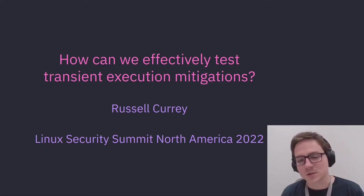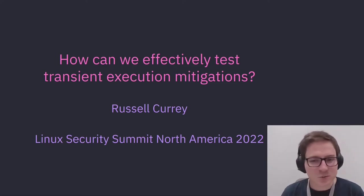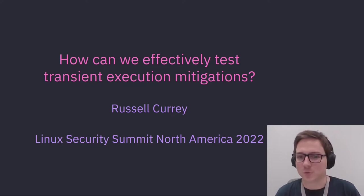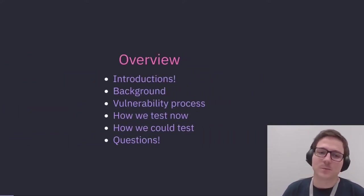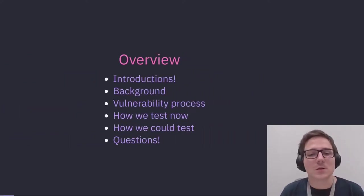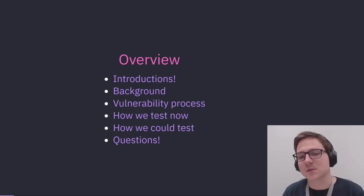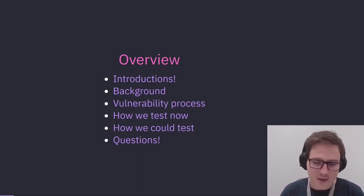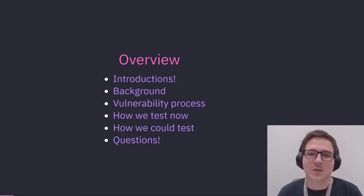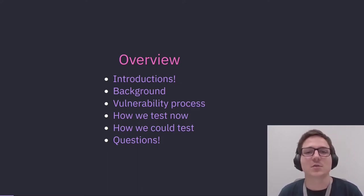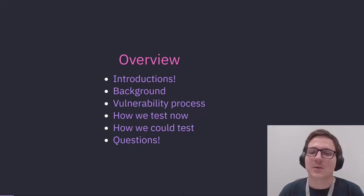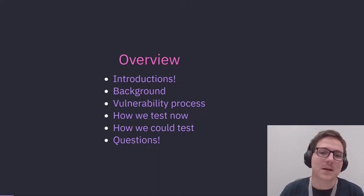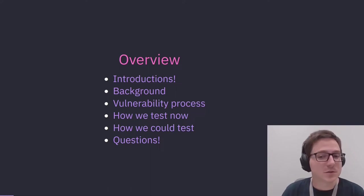We'll go over how we can test them better. If you have no idea what any of those words mean, don't worry, we will get into it. We'll go over the background of transient execution, look at what that means and how it works, have a look at how security vulnerabilities are discovered, reported, fixed, and distributed, and take a look at how exactly these vulnerabilities are tested currently and how we could potentially do better.